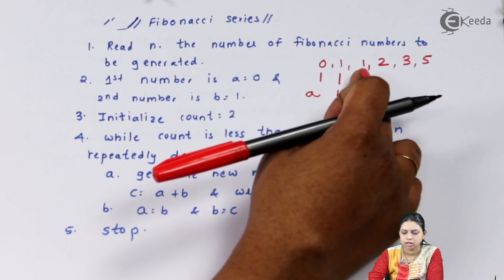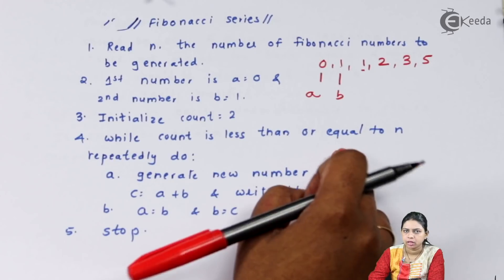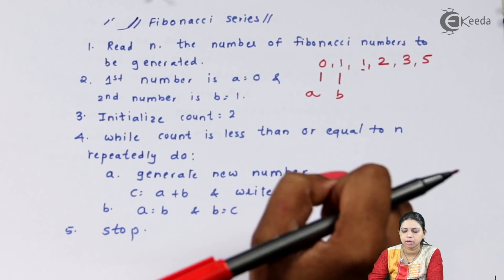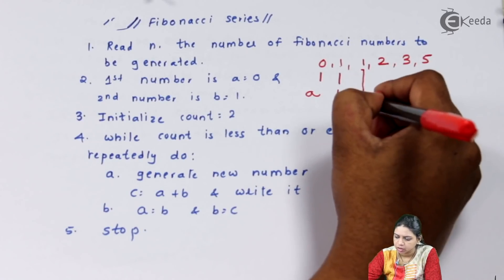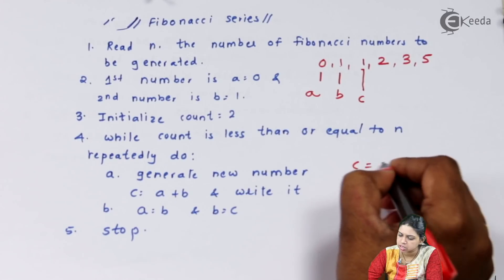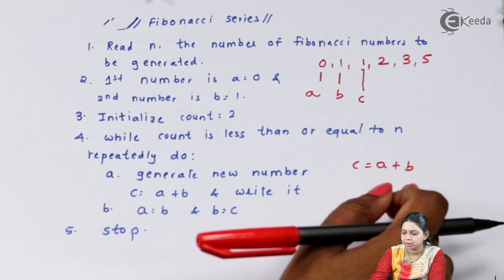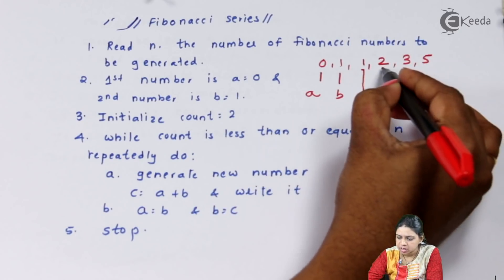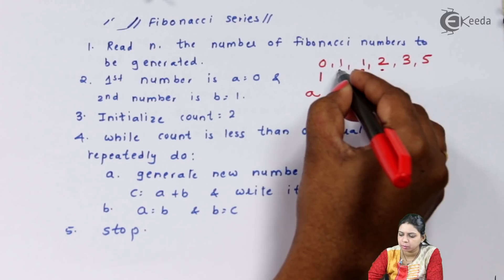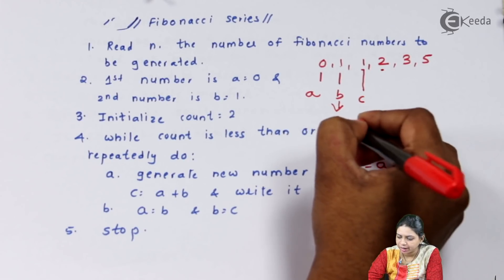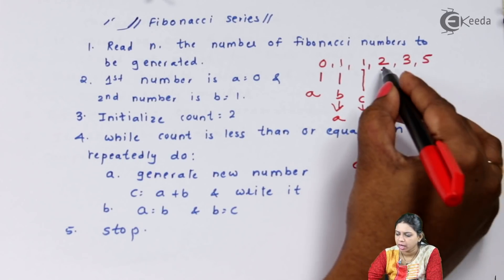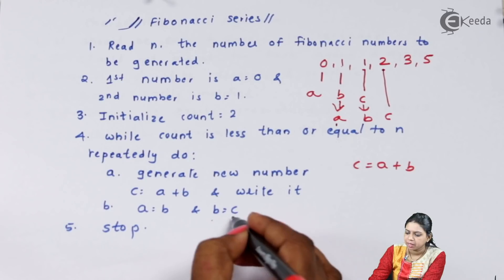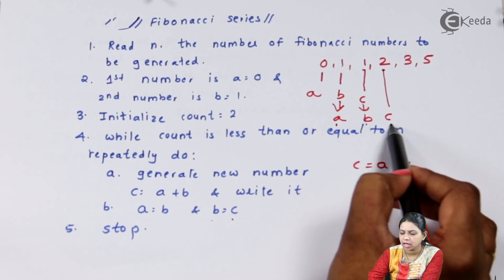While count is less than or equal to n, repeatedly generate a new number: c = a + b. Then exchange the terms: a = b, b = c. This shifts the window forward — b becomes the new a, and c becomes the new b — so that the next iteration computes the correct next term. Then increment count and repeat.